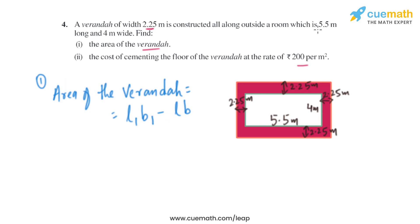So let's find the area of the veranda: 10 into 8.5 minus 5.5 into 4. On solving this, we get the area of the veranda as 63 square meters.